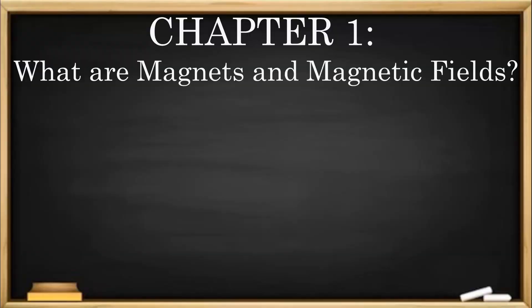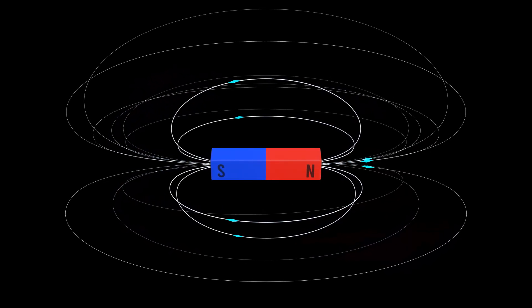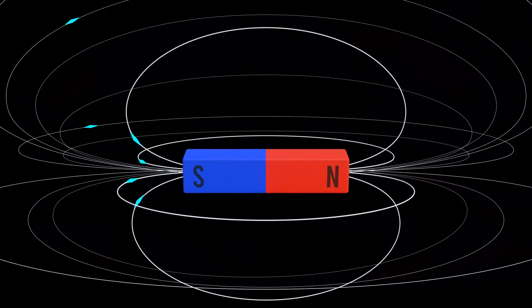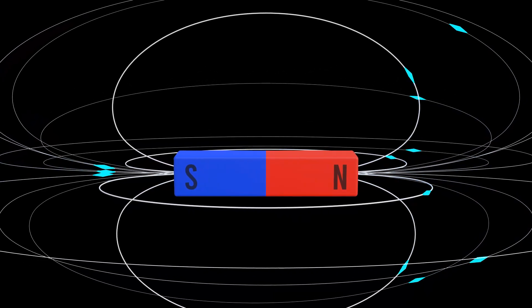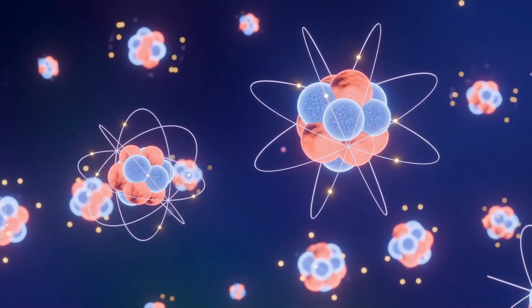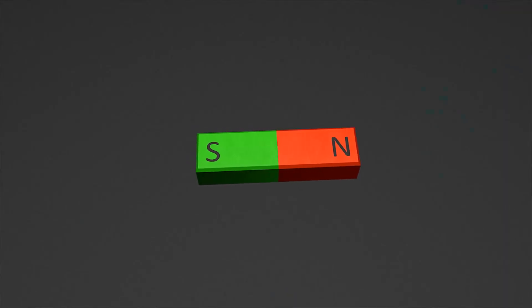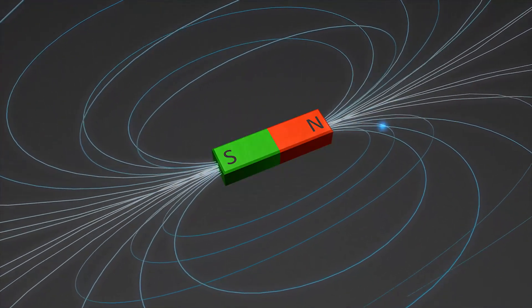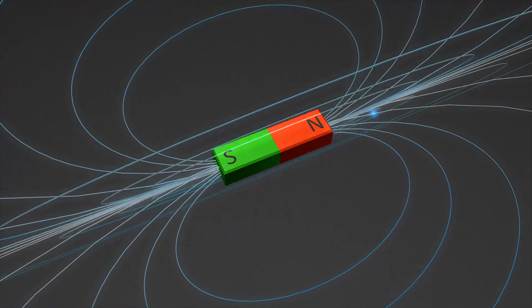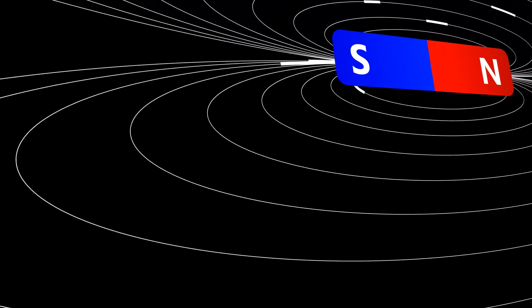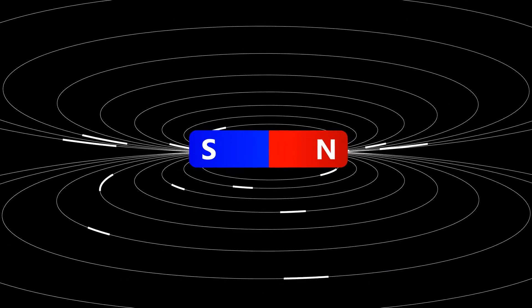Chapter 1: What are Magnets and Magnetic Fields? Magnets are objects that produce a magnetic field, which is an invisible force that can attract or repel certain materials. The force that magnets produce is called magnetism. This force is created by the movement of tiny particles inside atoms called electrons. A magnetic field is the area around a magnet where the magnetic force is felt. You can think of it like the reach of the magnet's power. The field looks like lines that go from the north pole of the magnet to the south pole. These lines are invisible, but they help show the direction in which the magnetic force acts.